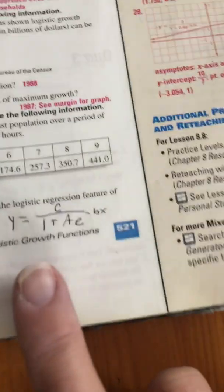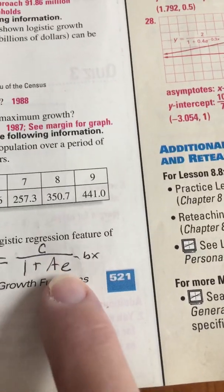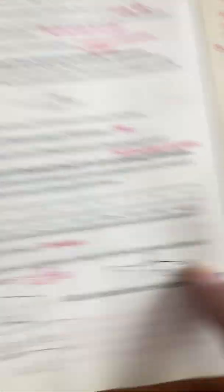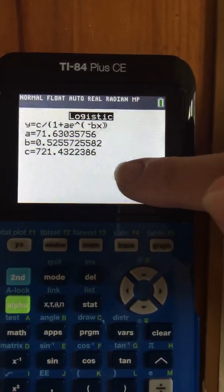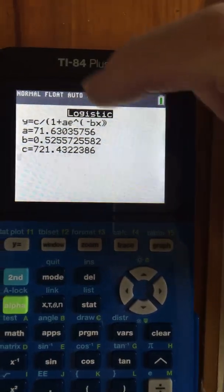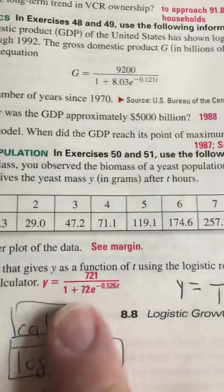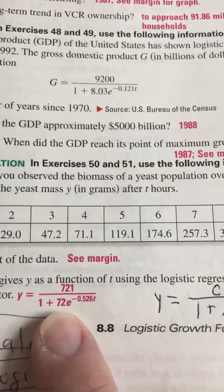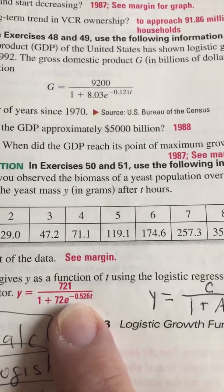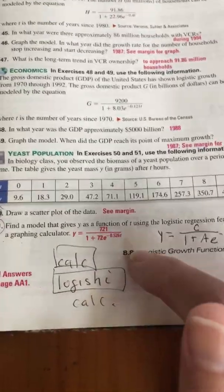So how it's written is in this form: Y equals C over 1 plus A times E to the negative BX, and they tell me that C is 721, B is 0.52, and A is 71. So that's this equation: Y equals 721 over 1 plus 72E to the negative 0.526, and they use T instead of X. So you do calc, logistics, and then tell it to calculate.